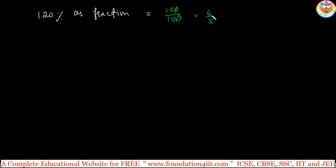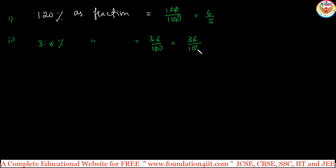Not only whole numbers — decimals work the same way. For example, 3.6 percent as a fraction: take 3.6 divided by 100, which simplifies to 36 by 1000, and further simplifies to 9 by 250. So percentage to fraction for decimals also means dividing by 100.